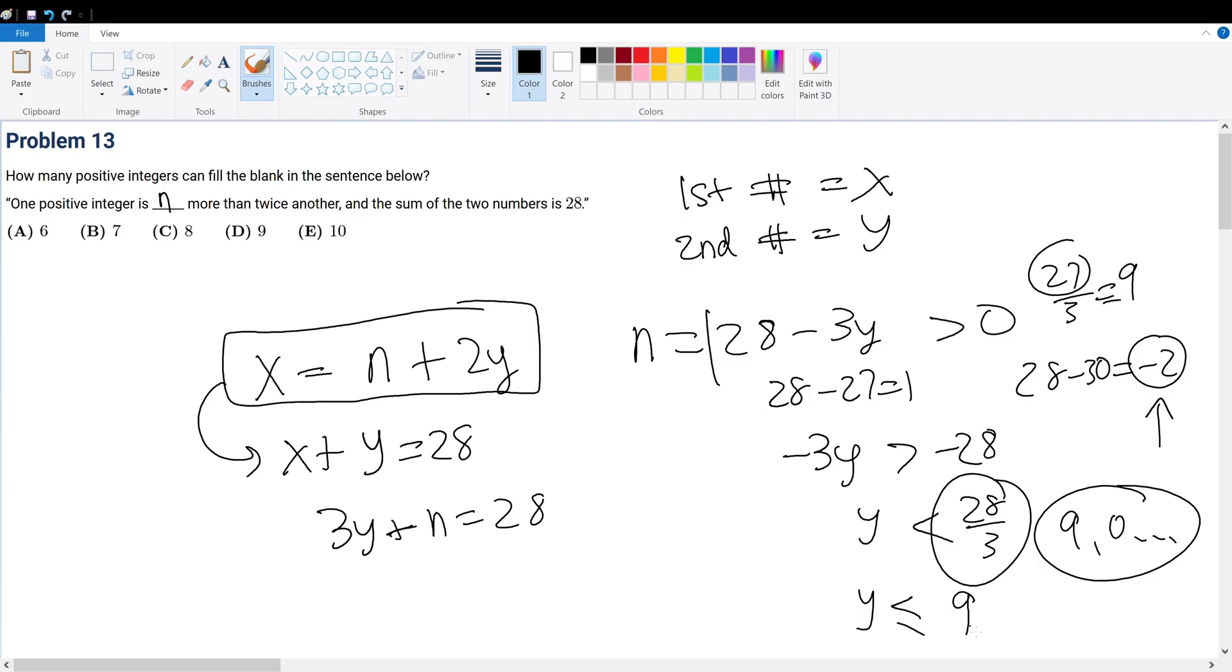At the same time, it cannot be 0, because that means it'll be 0 more, and it cannot be 0 more—that doesn't make any sense. So it has to be greater than or equal to 1.